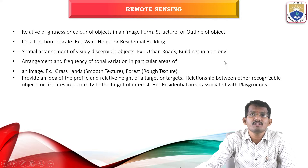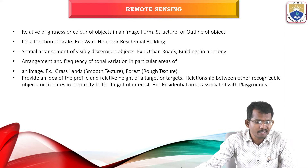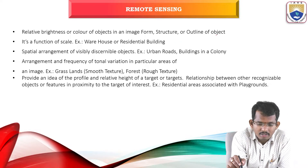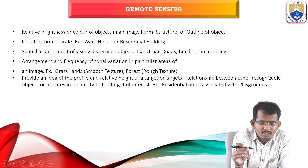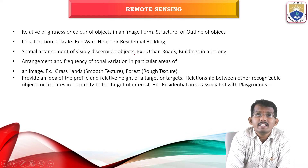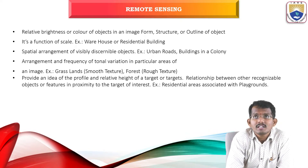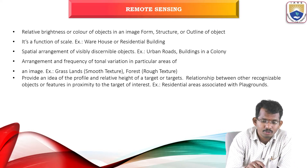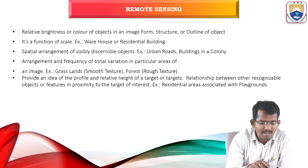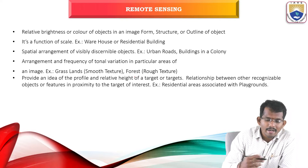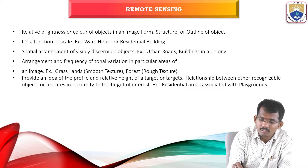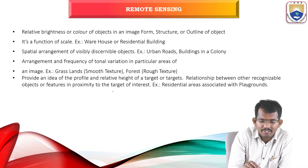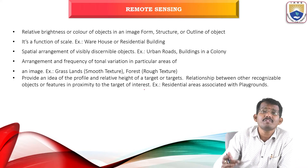Tone is the relative brightness or color of the object in an image — the structure or outline of the object is called tone. It is a function of the scale. Example: warehouse or residential buildings. Spectral element of visibility, discriminable objects — urban roads, buildings in a colony. Arrangement of frequency of tonal variation in particular areas of an image, like grassland, forest, etc. Shadow provides an idea of profile and relative height of targets; association is the relationship between recognizable objects or features in proximity of a target of interest.